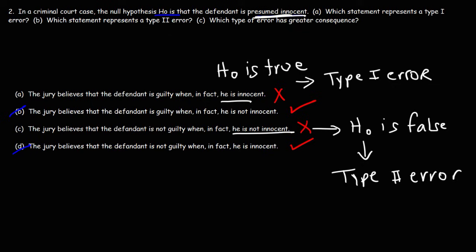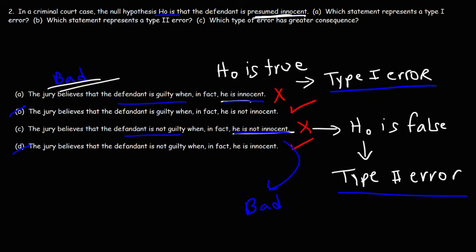They're accepting a false null hypothesis. Now, which type of error has greater consequence? Looking at the type 1 error, we have an innocent man whom the jury believes is guilty — if he does prison time when he's innocent, that is a very bad thing that shouldn't happen. Looking at answer choice C, the type 2 error, a guilty man is believed to be innocent — that's also a bad decision, but he may get caught next time. Having an innocent man punished for something he hasn't done is very, very bad, so I believe the type 1 error has the greater consequence here — though you might feel differently.